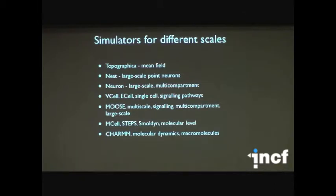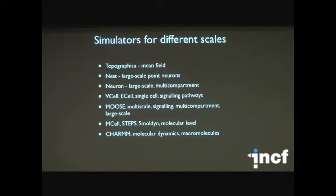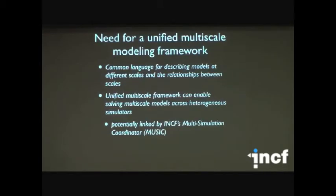CHARM, for example, captures protein folding and molecular dynamics. MCell, Steps, and Smolden all have molecular-level simulation abilities. MOOSE, which we heard about before, is one of the few simulators that does start to do some multi-scale, though batteries are not always included. VCell, ECell — there are many different simulators that at their own individual scales capture important modeling properties. But there is a real need for a unified multi-scale modeling framework.